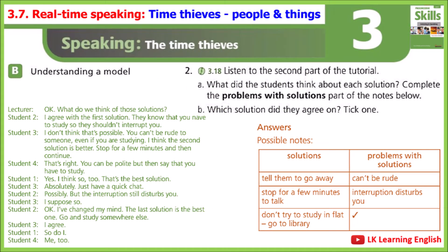3.18, Exercise B2: Listen to the second part of the tutorial. 'I agree with the first solution - they know that you have to study so they shouldn't interrupt you.' 'I don't think that's possible - you can't be rude to someone even if you are studying.' 'I think the second solution is better - stop for a few minutes and then continue.' 'That's right, you can be polite but then say that you have to study.' 'Yes, I think so too.' 'Absolutely - just have a quick chat possibly, but the interruption still disturbs you.' 'I suppose so.' 'I've changed my mind - the last solution is the best one: go and study somewhere else.' 'I agree.' 'So do I.' 'Me too.'